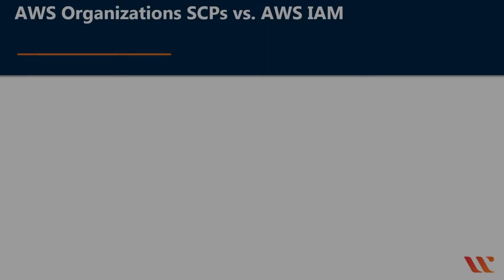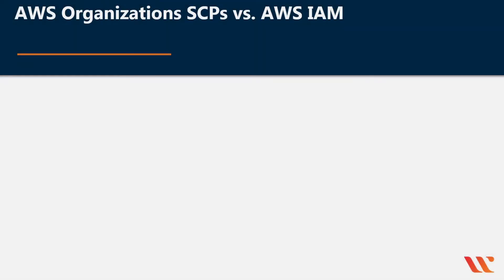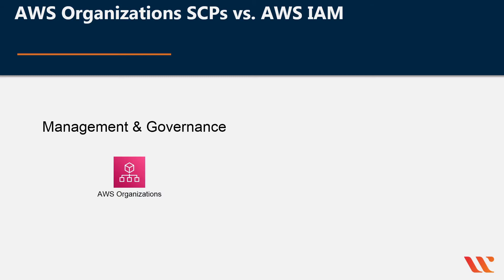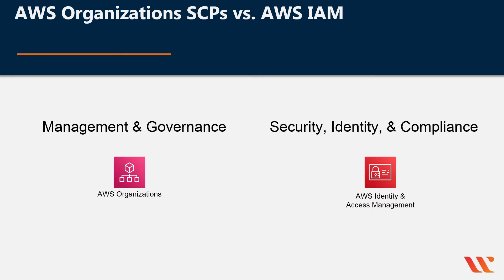Hello and welcome. My name is Michael Ellerbeck and today we will be talking about the differences between AWS Organizations SCPs versus AWS IAM. AWS Organizations is part of the Management and Governance category, and AWS Identity Access Management is part of the Security, Identity, and Compliance category.